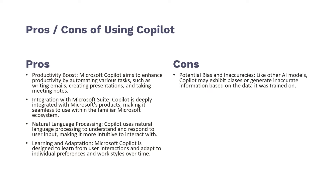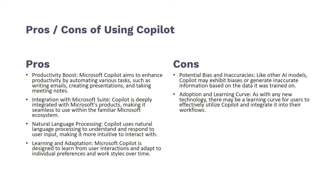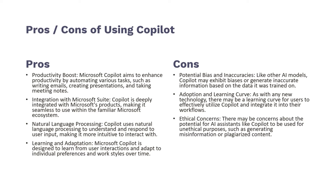Some of the cons of using Copilot: first, potential bias and inaccuracies — as a new technology, it might generate inaccurate information based on the data it was trained on. You'll notice throughout the course that sometimes I might not get the exact answer I want. There's also an adoption learning curve — you're going to have to get used to the interface and certain input commands and prompts. That's why this video will be helpful for you. And lastly, ethical concerns — it's an AI assistant, so we want to make sure we're not using it to generate misinformation or plagiarize content.